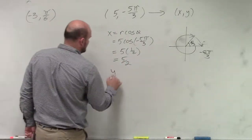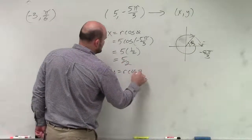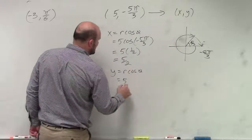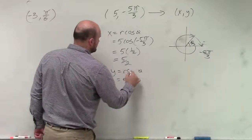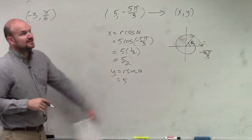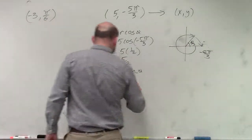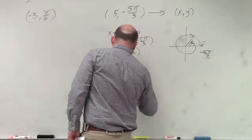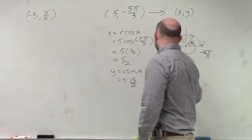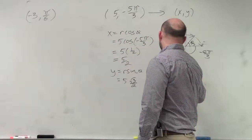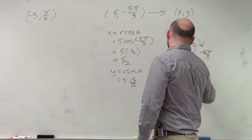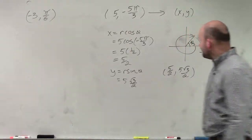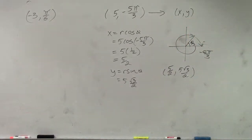Then to find sine, I do y equals r cosine of theta. Five times sine of theta. You can see sine is going to be square root of 3 over 2. Nothing I can really simplify there. So my x-coordinate is going to be, or my rectangular coordinate, is going to be 5 halves, comma, 5 square root of 3 divided by 2.